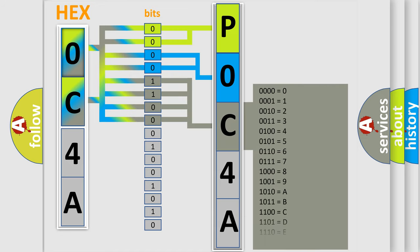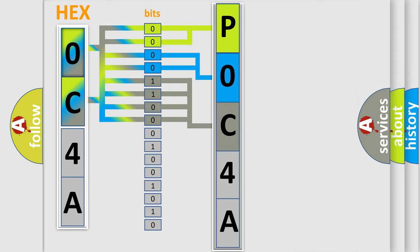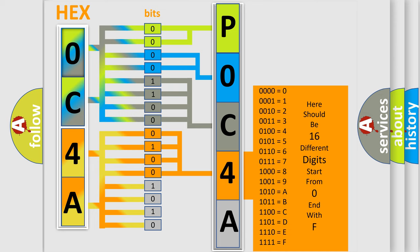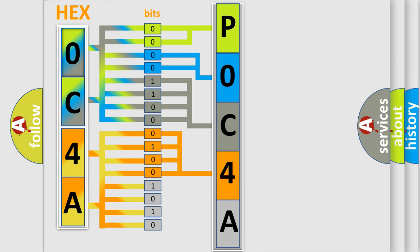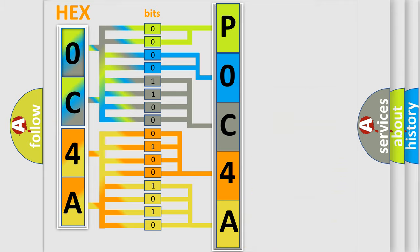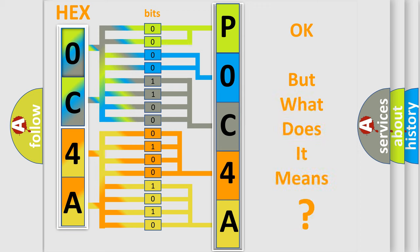The second byte is composed of a combination of eight bits. The first four bits determine the fourth character of the code, and the combination of the last four bits defines the fifth character. A single byte conceals 256 possible combinations. We now know in what way the diagnostic tool translates the received information into a more comprehensible format.